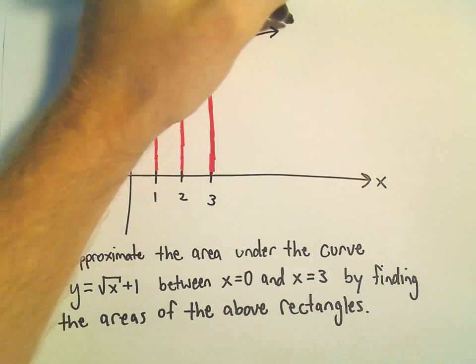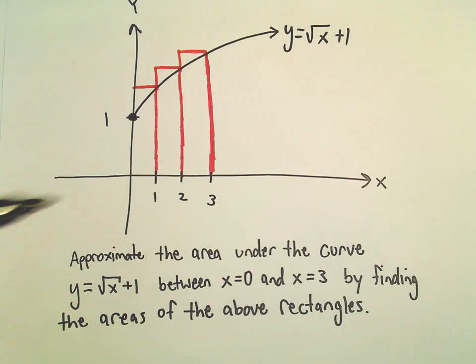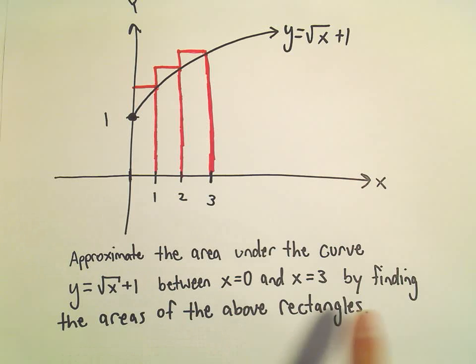So here's y equals root x plus 1. We're going to do that between x equals 0 and x equals 3, and we're going to do this by finding the areas of the rectangles.